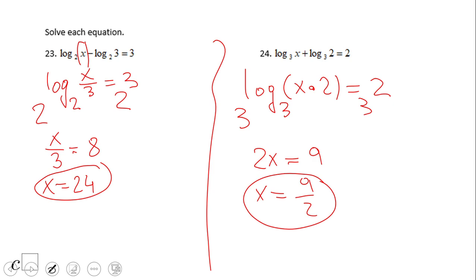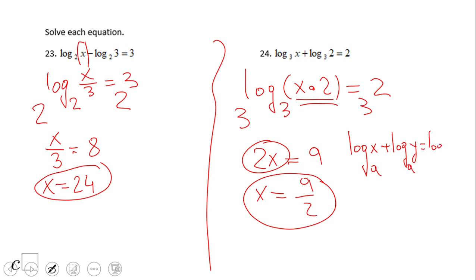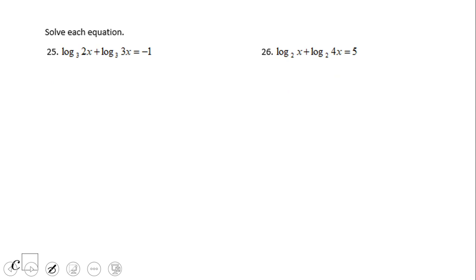If you end up with x equals 9/2, then you did a wonderful job. Here 2 times x becomes 2x — multiplication is commutative. The rule used is: log base a of x plus log base a of y equals log base a of the product x times y. This is called the product rule. We're going to use the same product rule here, so we have log base 3 of...